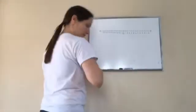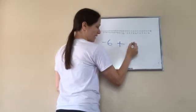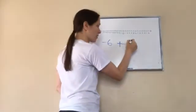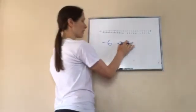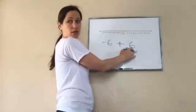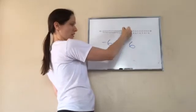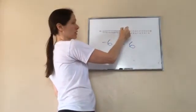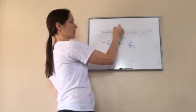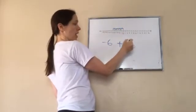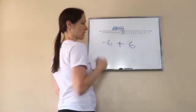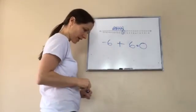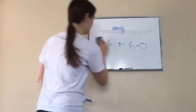Let's do another one: negative six plus positive six. If there's no sign shown you can assume it means positive. So we have negative six plus positive six. Start at zero, go left six: 1, 2, 3, 4, 5, 6. Then positive six means go to the right: 1, 2, 3, 4, 5, 6. The answer is going to be zero — good job!